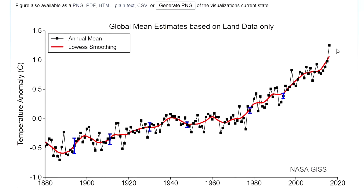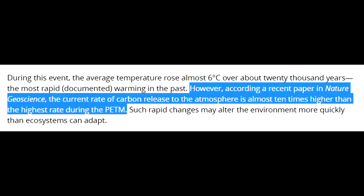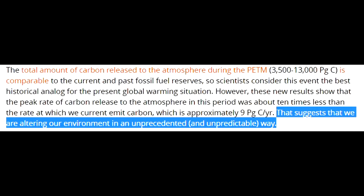Proponents of global warming never claimed the Earth wasn't hotter in the past, and never claimed the Earth didn't cycle between hotter and colder periods. But one claim has been that the rate of change in temperature has increased to a level that has rarely, if ever, been seen before in the history of the Earth - the figures go between 5 and 10 times faster. Based on temperature records of the past 100 years, and especially from the past 50 years from around the 1970s, we are heating up the Earth at an unprecedented rate. From the geological record, there were times in the past where Earth heated at the same speed, but these appear to have been the result of catastrophic change such as mega-volcano eruptions. Our current rate of carbon release to the atmosphere is almost 10 times higher than the highest rate during the Paleocene-Eocene Thermal Maximum, suggesting we are altering our environment in an unprecedented and unpredictable way.